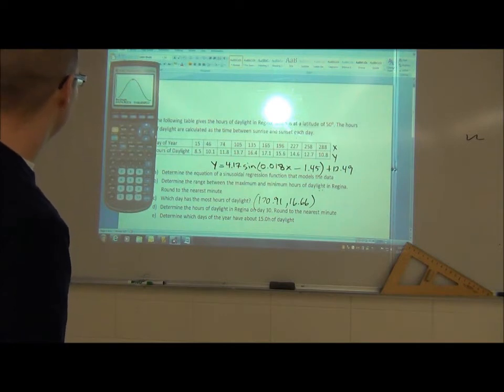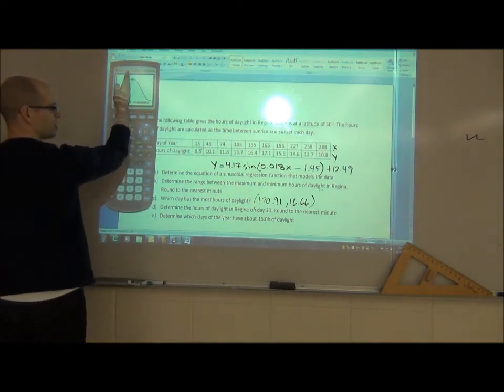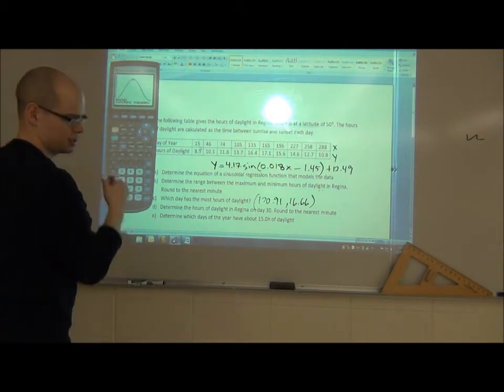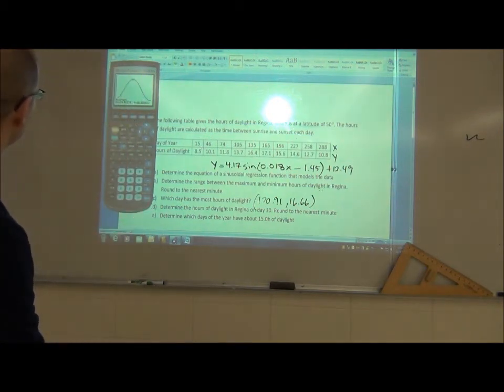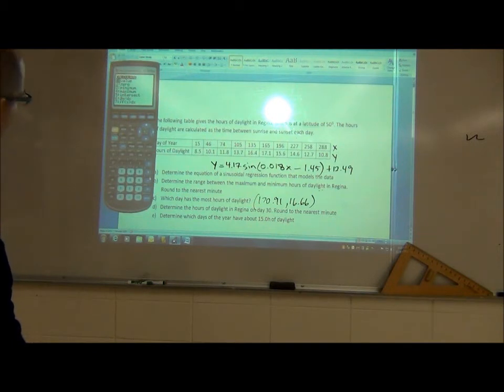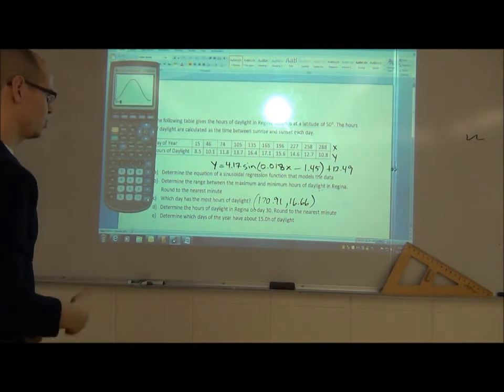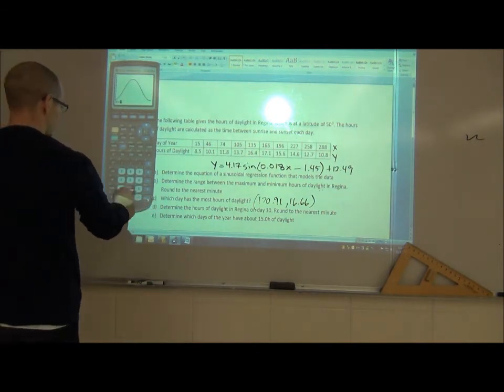D: determine the hours of daylight in Regina on day 30. No problem. We want to go to where x is 30 and see what the hours of daylight are on the y-axis. To do that, go second function trace, which takes you to the calculate menu. Go down to intersect, or sorry, go to value, which is number one. And what that does is you can put in an x value and it'll give you the y value. So we're going to put in 30 for day 30.